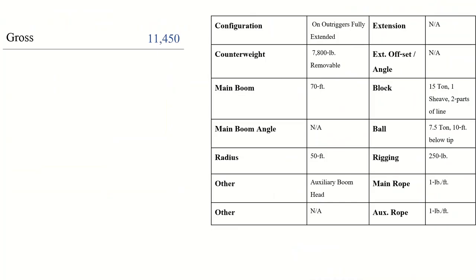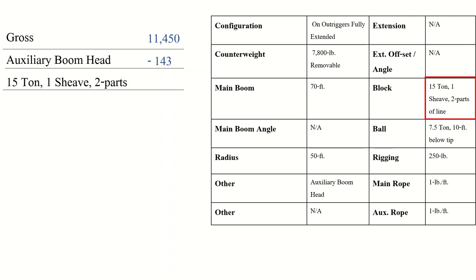Now we're going to take that number and subtract all the deductions laid out on the chart. It's important to go through these in order because it's easy to miss some deductions. First up, right under radius, is the auxiliary boom head — from page 2 that weighs 143 pounds. The next few boxes are N/A so we skip those until we get to the block, which is where we're lifting from. The 15-ton one-sheave block weighs 380 pounds.